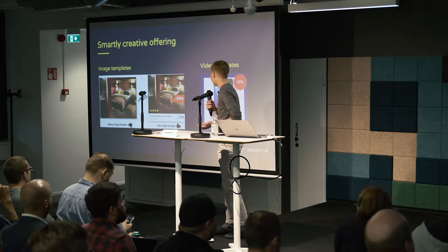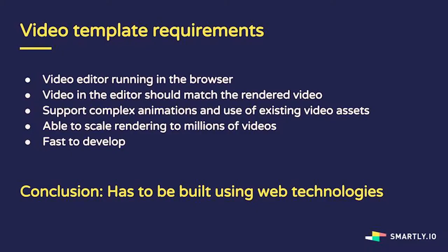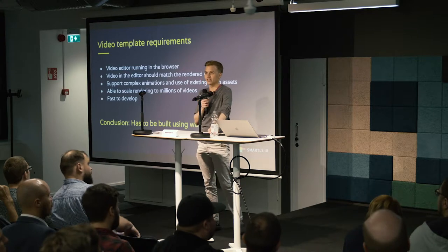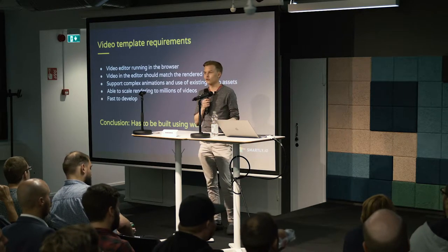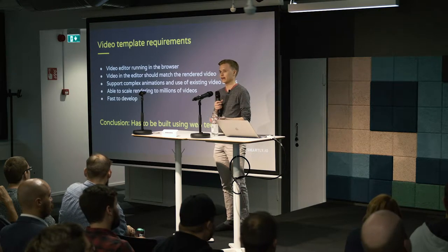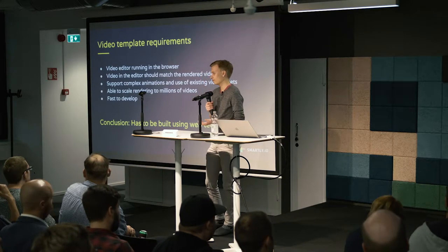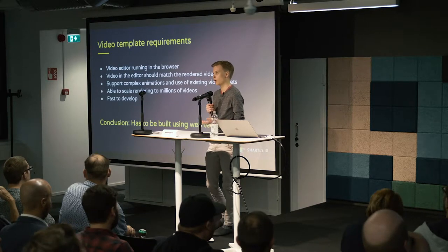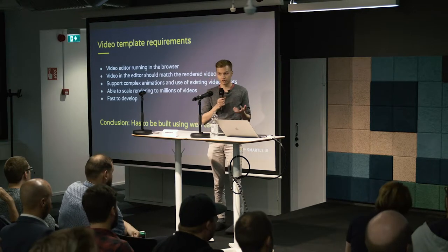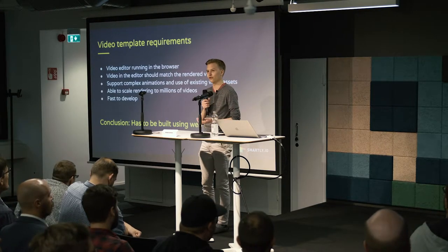On the right you can see what a video template looks like when it works — we take some static assets and make those into a video. When we started looking at this new feature we had some initial requirements in mind. The Smartly tool is built for the browser, so the editor should also run in the browser. The video in the editor should match the rendered video as closely as possible. We also need support for complex animations, existing video assets, and it needs to scale to at least a million videos. And last but not least, it needs to be fast to develop — we are not a video editing company.